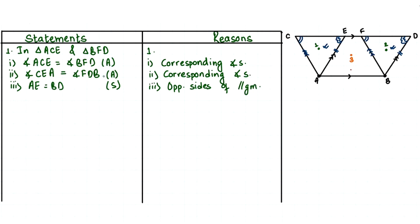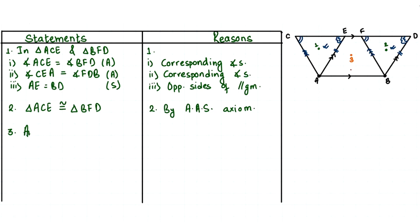Now that we have shown these three things are equal in the two triangles, we can write: triangle ACE is congruent to triangle BFD, by the AAS axiom of congruency. Since the two triangles are congruent, their areas are also equal. So area of triangle ACE is equal to area of triangle BFD, because the areas of congruent triangles are always equal.